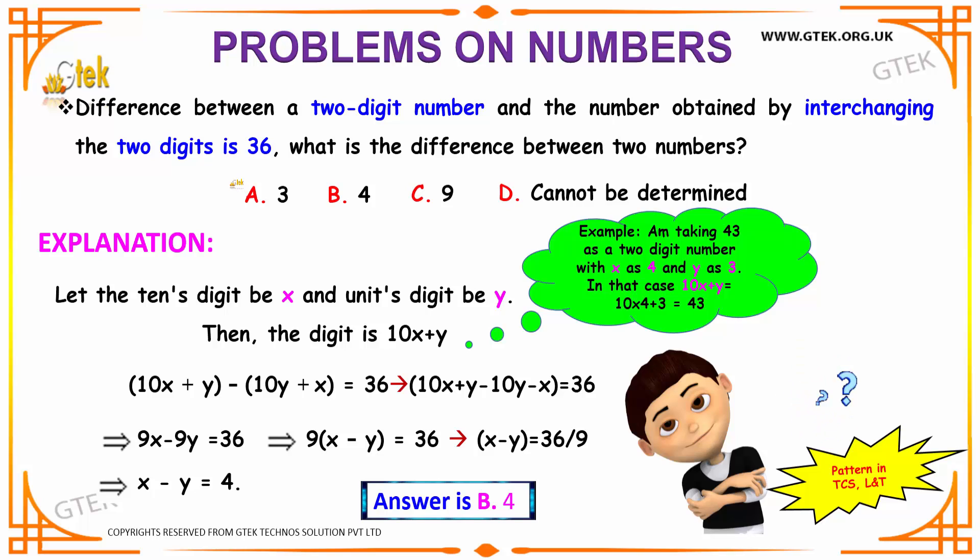Let us see our options over here before we start solving. Our options are 3, 4, 9 and cannot be determined. Well, as I had explained before, we are taking our tens digit to be x and units digit to be y. So a digit can be written in the form 10x plus y.